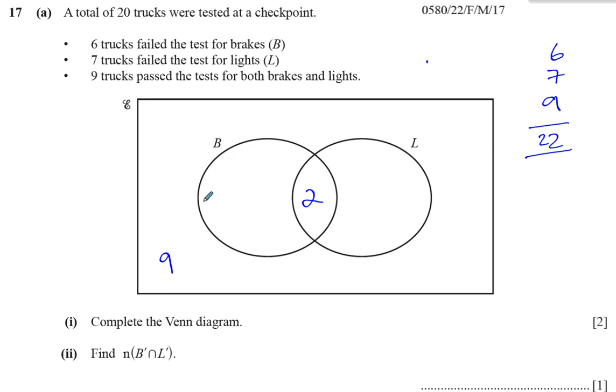Now, we can fill in the rest of the Venn diagram quite easily, because we know that in the circle B, the ones that failed the test for brakes, there must be 6 altogether. That means there must be 4 in this region here. And in the test for lights, there were 7 that failed altogether. So, there must be 5 in this region here. That gives us 7 in the circle for failing the lights, 6 in the circle for failing the brakes, and 9 outside of both those circles, the ones that passed both tests. And to make sure, to make fully sure that we've done the right thing, we can add these numbers together, and they should add up to 20. So, 9 plus 4 is 13, plus 2 is 15, plus 5 is 20. So, we know we're on the right tracks there. So, that is the complete Venn diagram.